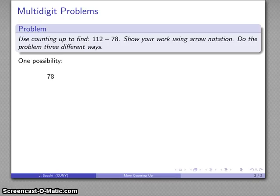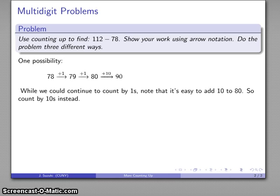How can we start this? One possibility is we might start at 78 and just start counting. So, 78, 79, 80, and here's something useful. I'm now at a benchmark number. I'm at 80. So, I could continue to count up by 1s, but let's go ahead and count up by larger amounts. Since 80 is a 10, I can count up by 10. So, 80 to 90 to 100 to 110.